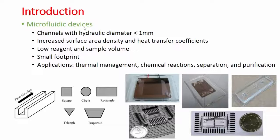Basically, microfluidic devices allow you to handle really small volumes, because of which the reagent volume can be small. They also have a very high surface area to volume ratio, which allows these devices to investigate the fluid much more efficiently. You can have different shapes and sizes for these devices — square, rectangular, and so on — depending on the type of fabrication. These are a few examples of devices we have fabricated in the past.